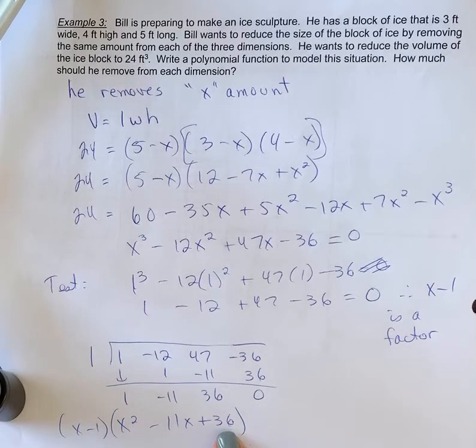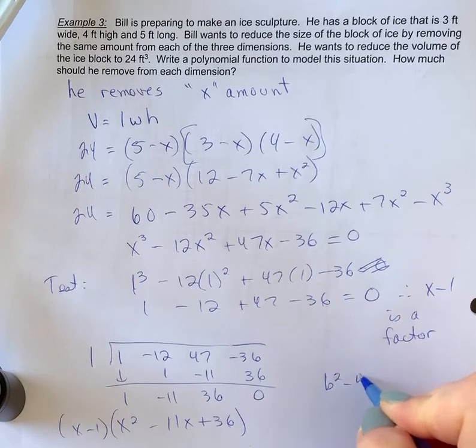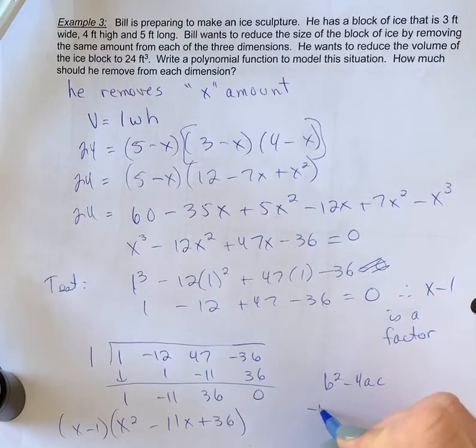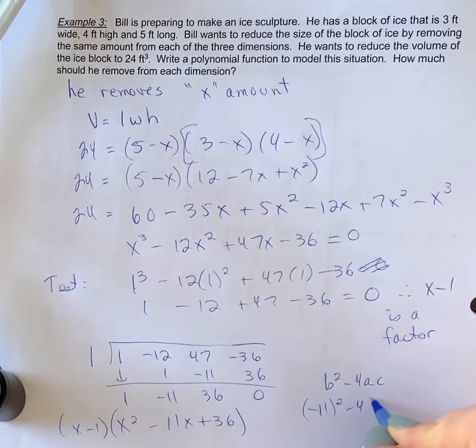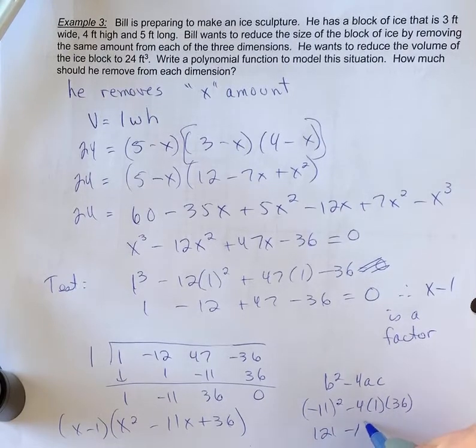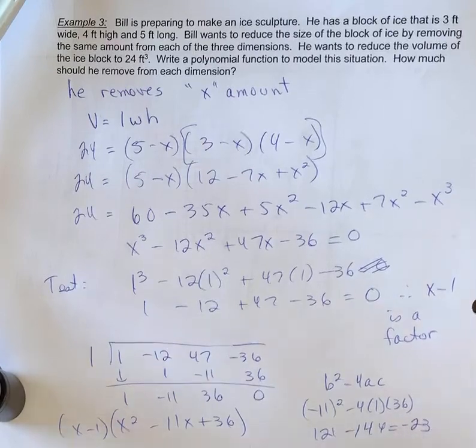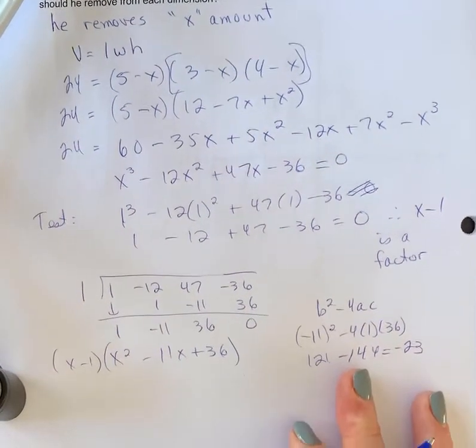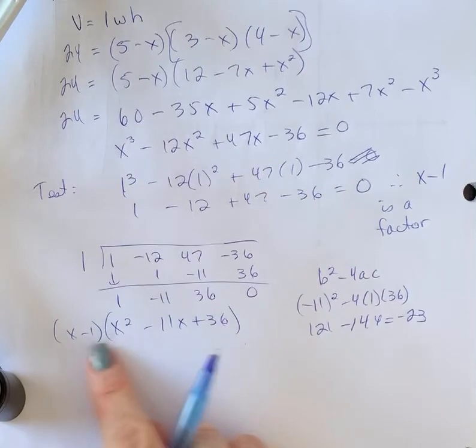Now, we would try to factor this. This does not factor further. One of the things you could do if you were trying to factor it is quickly check the discriminant. So this is a good review. And you'll see that when you do this, you get a negative discriminant, which means that you would not be able to factor that further.